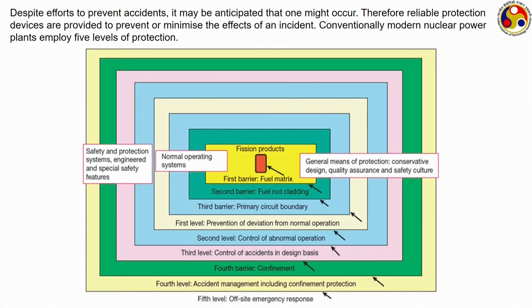Despite all these efforts, some fission products may still escape or accidents may occur. Based on experience with nuclear reactors, we can now anticipate the types of accidents that may happen. Modern nuclear power plants employ, along with those four barriers, five layers of protection.